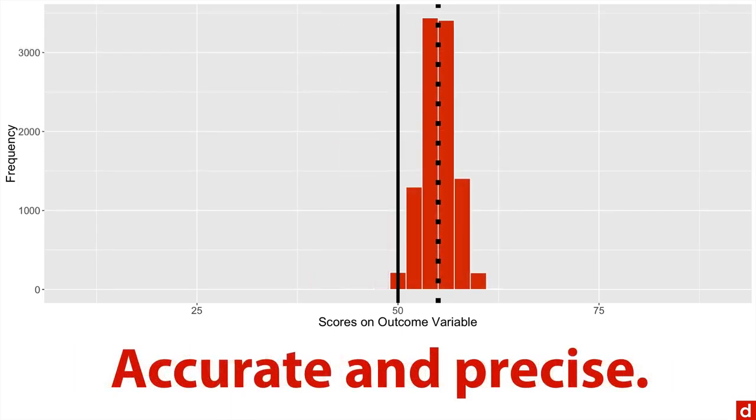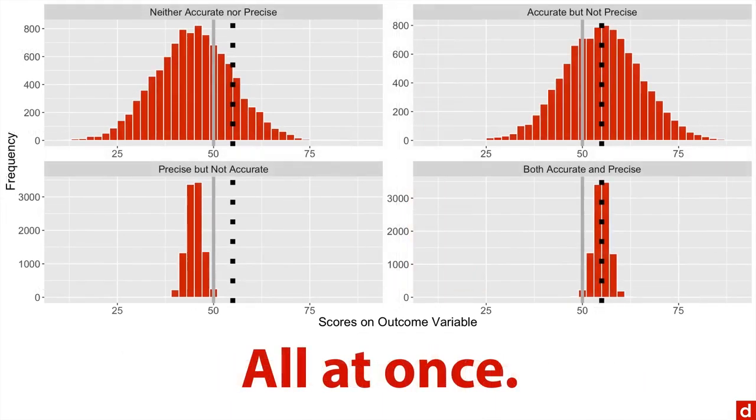The ideal situation is this: you have an accurate estimate where the distribution of sample values is really close to the true population value, and it's precise, really tightly knit. You can see just about 95% of it is on the correct side of 50.